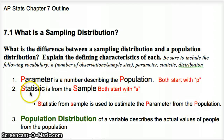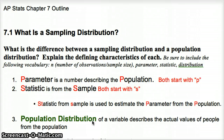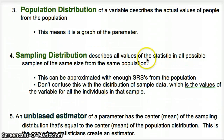Remember: parameter and population both start with P; statistic and sample both start with S. Our population distribution is the actual values of people from the population — that's what we're always trying to get. With more computing and data gathering, we're getting more information about the actual population distribution, which is shifting where statistics will be in the next 10 to 15 years. So the population distribution is the graph of the true population, while a sampling distribution is all values of the statistic in all possible samples of the same size from the population.